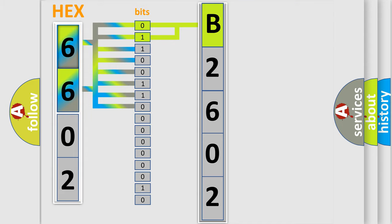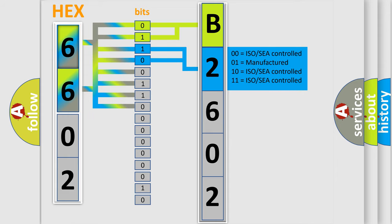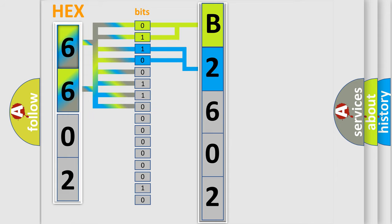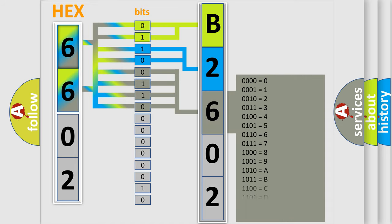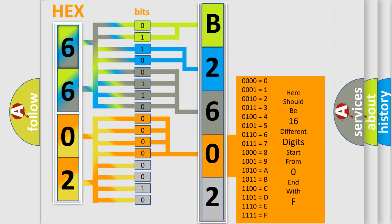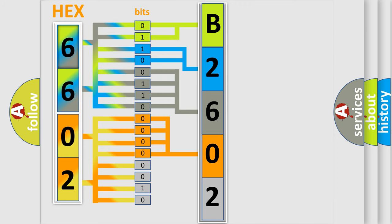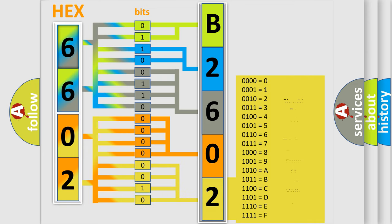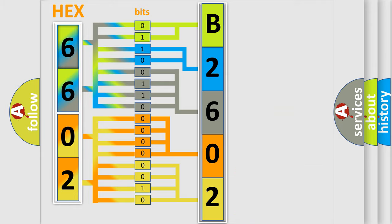The next two bits determine the second character. The last four bits of the first byte define the third character of the code. The second byte is composed of a combination of eight bits — the first four bits determine the fourth character, and the last four bits define the fifth character. A single byte conceals 256 possible combinations.